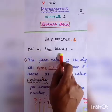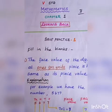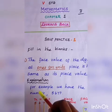First one, fill in the blanks. What is the smallest counting number? The smallest counting number is 1. And the smallest whole number is 0.